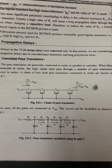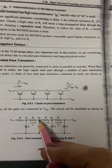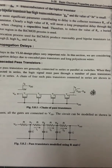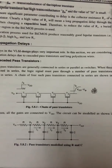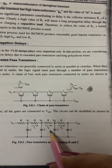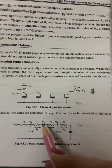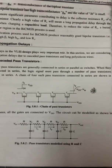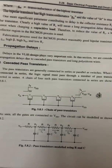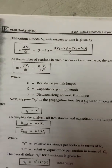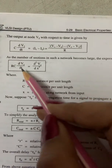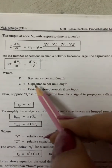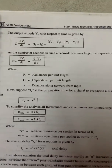The output at node V2 with respect to time t can be given by: C · dV2/dt = i1 − i2 = (V1 − V2)/R − (V2 − V3)/R. As the number of sections in such a network becomes large, the expression reduces to: R·C · dV0/dt = d²V0/dx², where R is the resistance per unit length, C is the capacitance per unit length, and x is the distance along the network from the input.